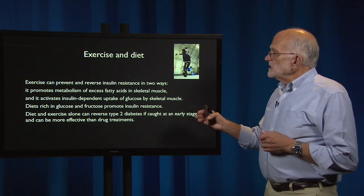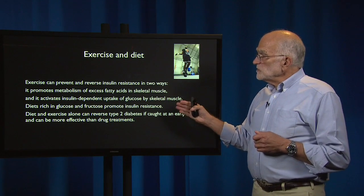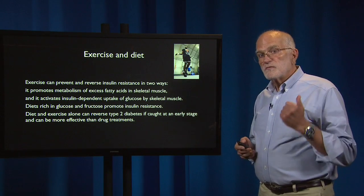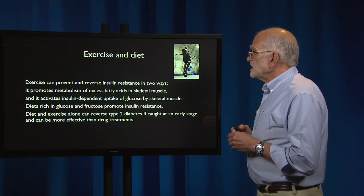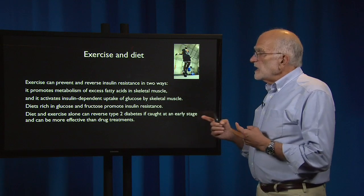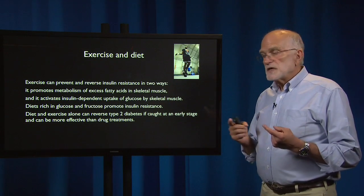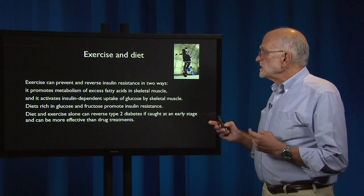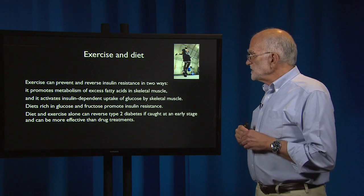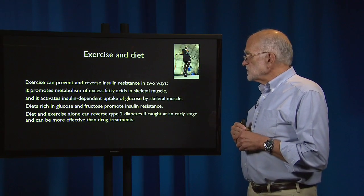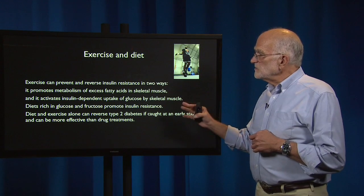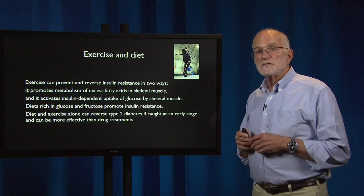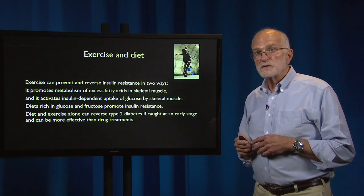A diet rich in glucose and fructose, however, can promote insulin resistance. Diet and exercise alone can reverse type 2 diabetes if it's caught in an early stage, and that can be more effective than treating it with drugs.